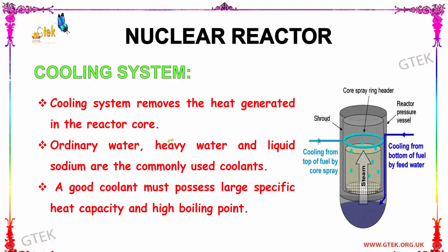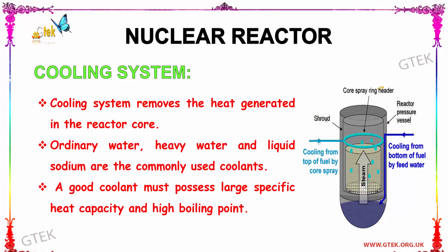Now let us see about the cooling system. The cooling system removes the heat generated in the reactor core. Ordinary water, heavy water, and liquid sodium are the commonly used coolants. A good coolant must possess large specific heat capacity and high boiling point. The cooling system cools the fuel from the top by core spray and from the bottom by feed water, and includes a shroud, reactor pressure vessel, and core spray ring header.